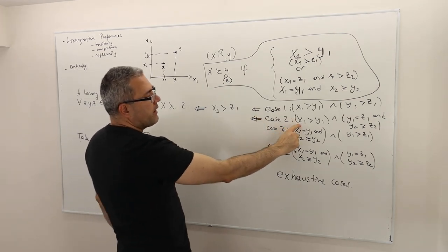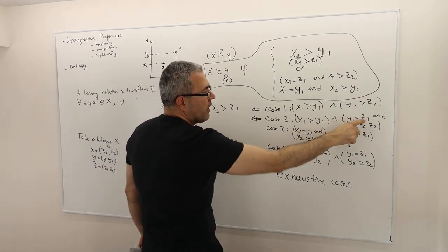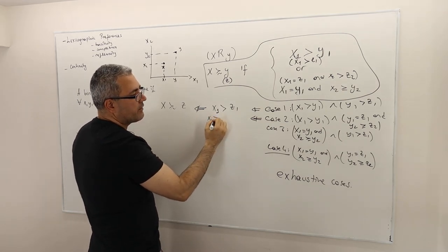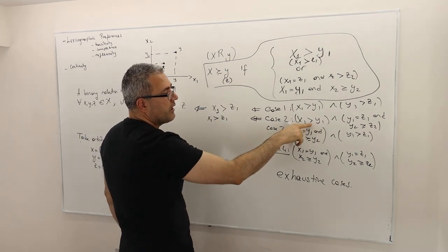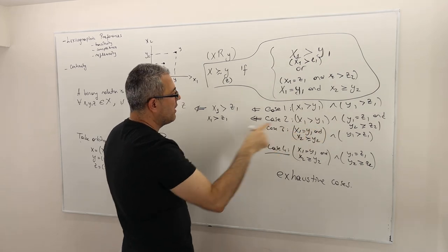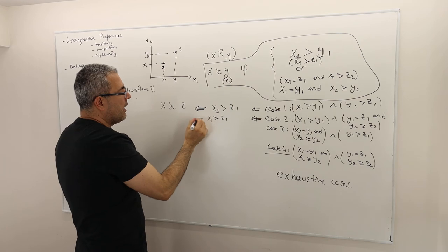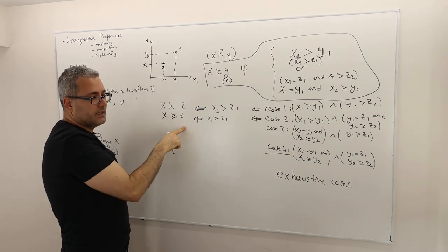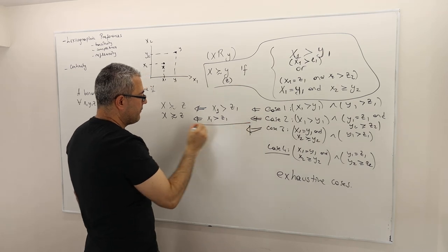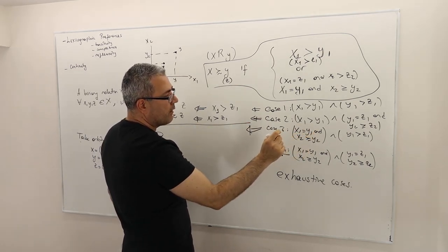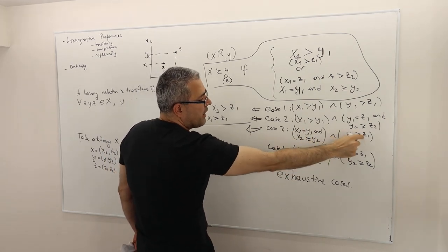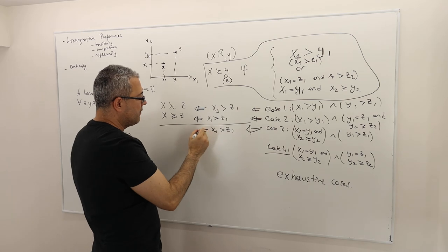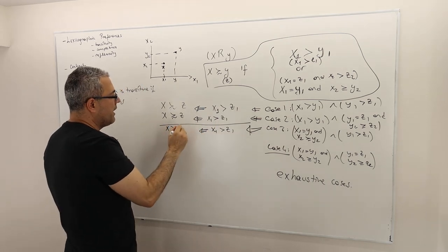Case 2: x1 > y1 and y1 = z1. Since these are real numbers, x1 is strictly greater than z1. So again I don't need to care about y2 and z2 — by the definition of 'at least as good as', x is at least as good as z. Case 3: x1 = y1 and y1 > z1. Therefore x1 > z1 strictly, and without looking at second coordinates, x is at least as good as z.